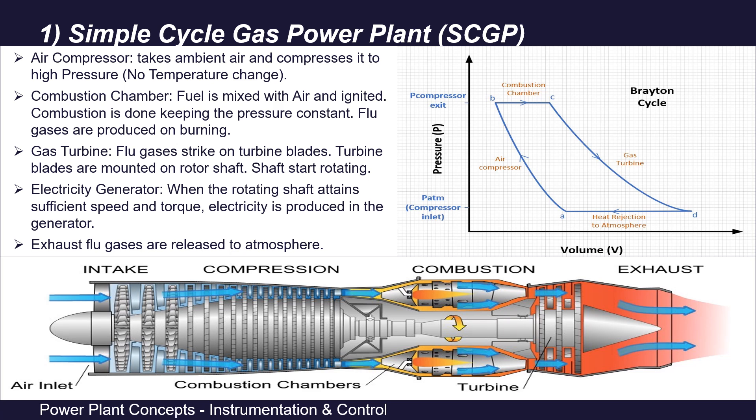Next, this compressed air goes to the combustion chamber. Here the fuel gas mixes with this air and the fuel-air mixture is ignited with a spark. This combustion is done keeping the pressure constant. The combustion product is flue gases, and as a result of this combustion, there is an increase in volume. This is traced on the pressure versus volume graph from point B to point C — pressure is constant but volume is increasing.